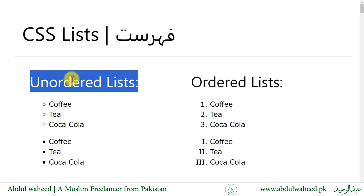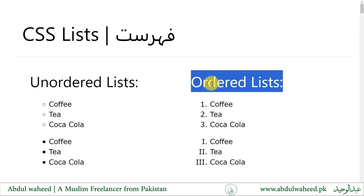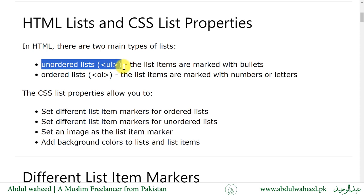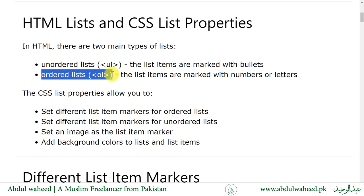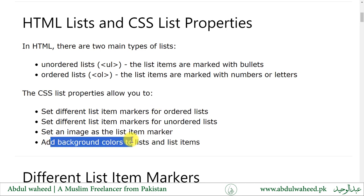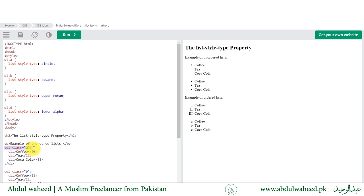CSS Lists — an unordered list looks like this. In HTML there are two main types of lists: unordered lists, where items are marked with bullets, and ordered lists, where items are marked with numbers or letters. The CSS list properties allow you to set a different list item marker, set an image as a list item marker, and add background colors. Here we have an unordered list with class A applied — list-style-type: circle.